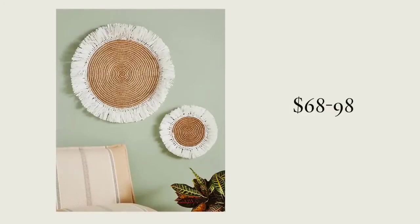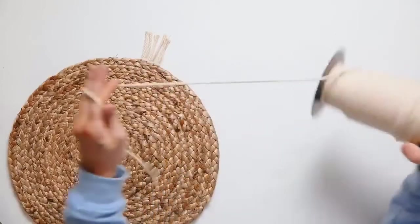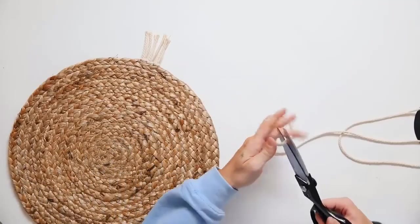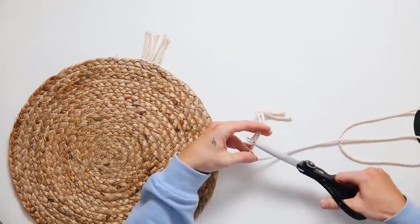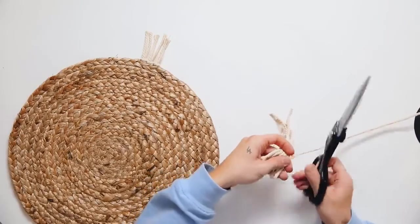Saving one of my favorites for last, I'm going to be recreating these Anthropology wall baskets that literally retail for $98. I'm starting with a Target placemat that was $5.99. I'm using macrame rope and cutting it into six-inch sections, looping these into the sides very similar to that fringed wall mirror I created.